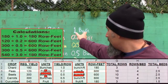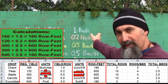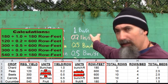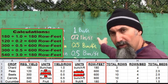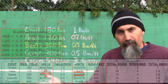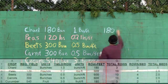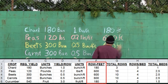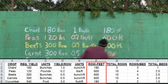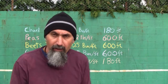All we do now is take our total quantity needed and divide it by the expected yield, and that gives us the total row feet — the total length of crop we have to plant. That comes out to 180 feet of chard, 600 feet of peas, 600 feet of beets, 600 feet of carrots, and 180 feet of cucumber.